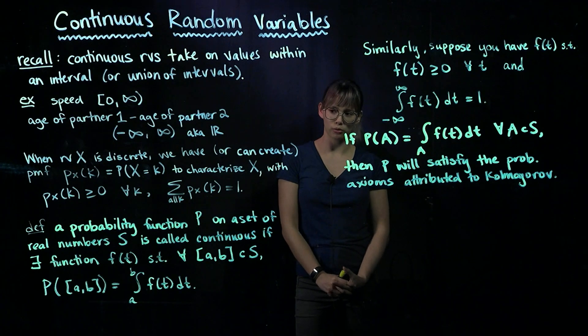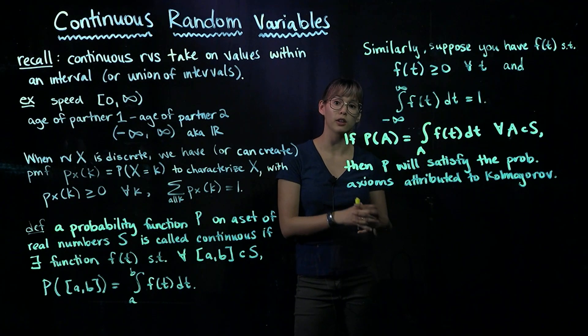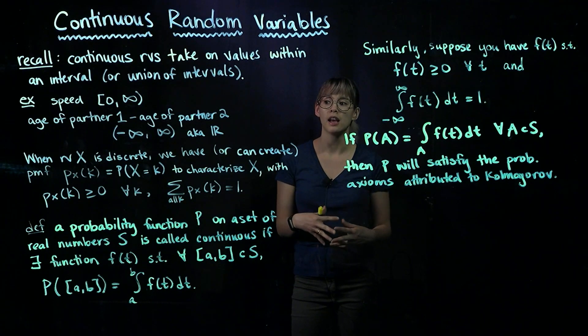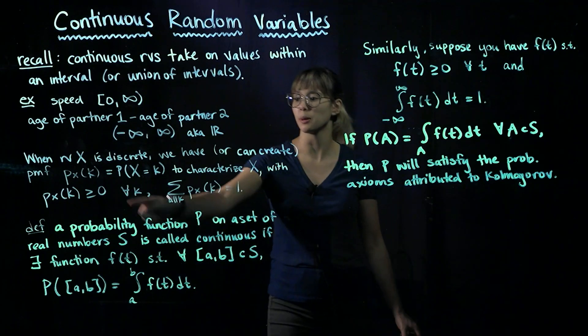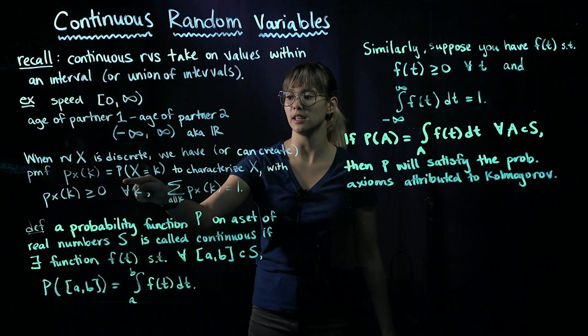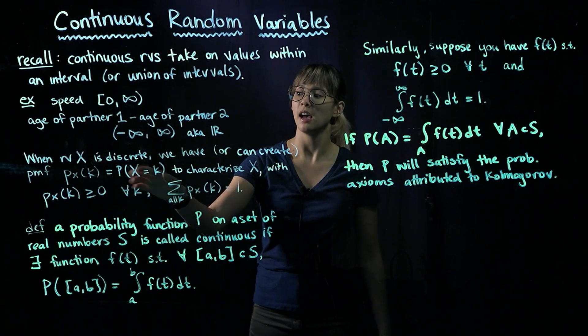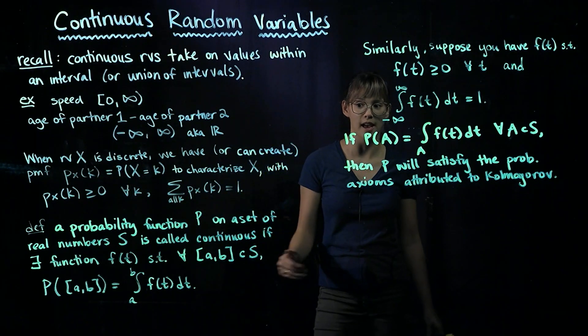When we were talking about a discrete random variable X, then we either had or we could create a PMF, P sub X of k, and remember that is equal to the probability that X equals k. And we could use this PMF to characterize X.